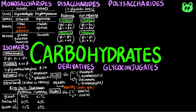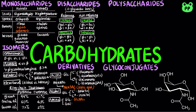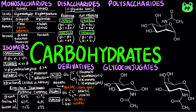In amino sugars, the hydroxyl at carbon-2 of the parent compound is replaced with an amino group, which is commonly condensed with acetic acid, such as N-acetylglucosamine derived from glucose, and N-acetylgalactosamine derived from galactose, as well as N-acetylmannosamine derived from mannose. GlcNAc and GalNAc are key components of glycosaminoglycans, as well as many glycoproteins and glycolipids.